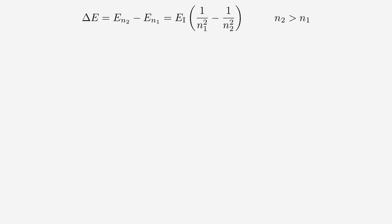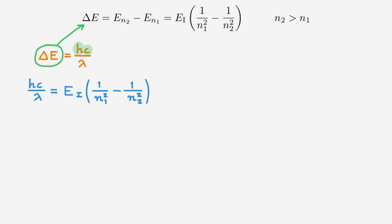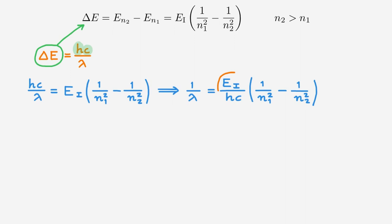It is common practice to describe the emitted photon using its wavelength rather than its energy, so we will now convert this expression accordingly. Remember that we can relate the energy and wavelength of a photon via this equation, which involves the Planck constant h and the speed of light c. We can insert this expression for the photon energy and rearrange to find that the inverse wavelength is equal to a prefactor times 1 over N1 squared minus 1 over N2 squared. We now collect the prefactor into a new constant Rh, and with this we arrive at the Rydberg formula, which gives us the inverse of the emitted photon wavelength as equal to this expression, with N2 larger than N1 for emission.